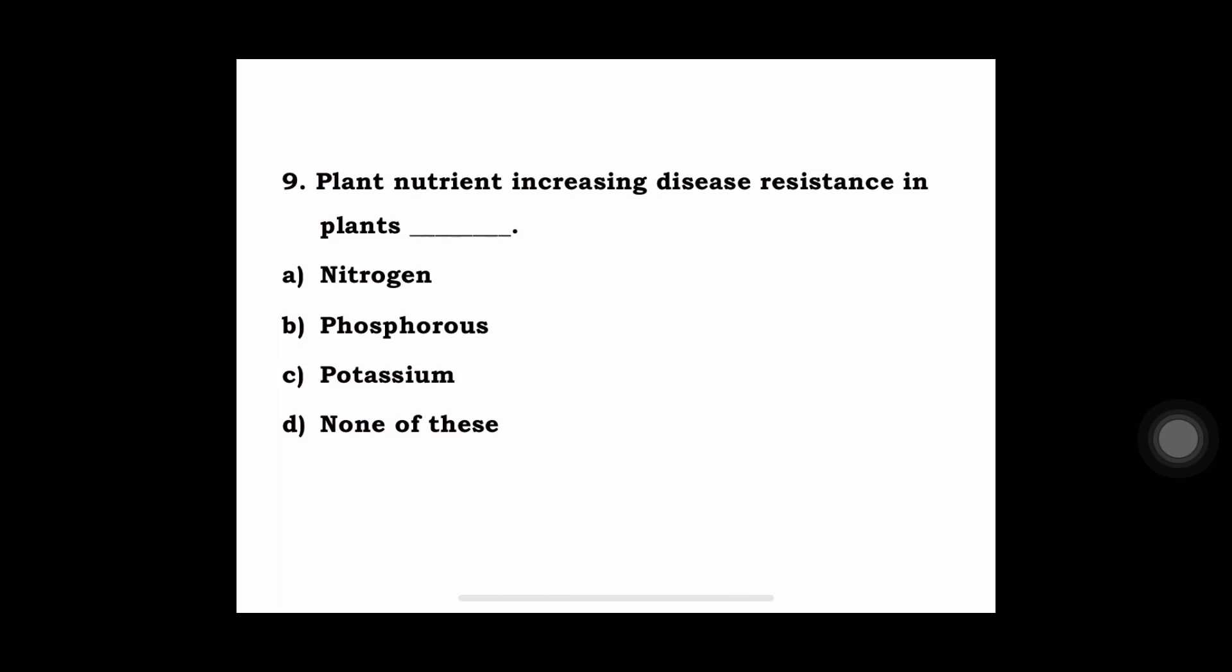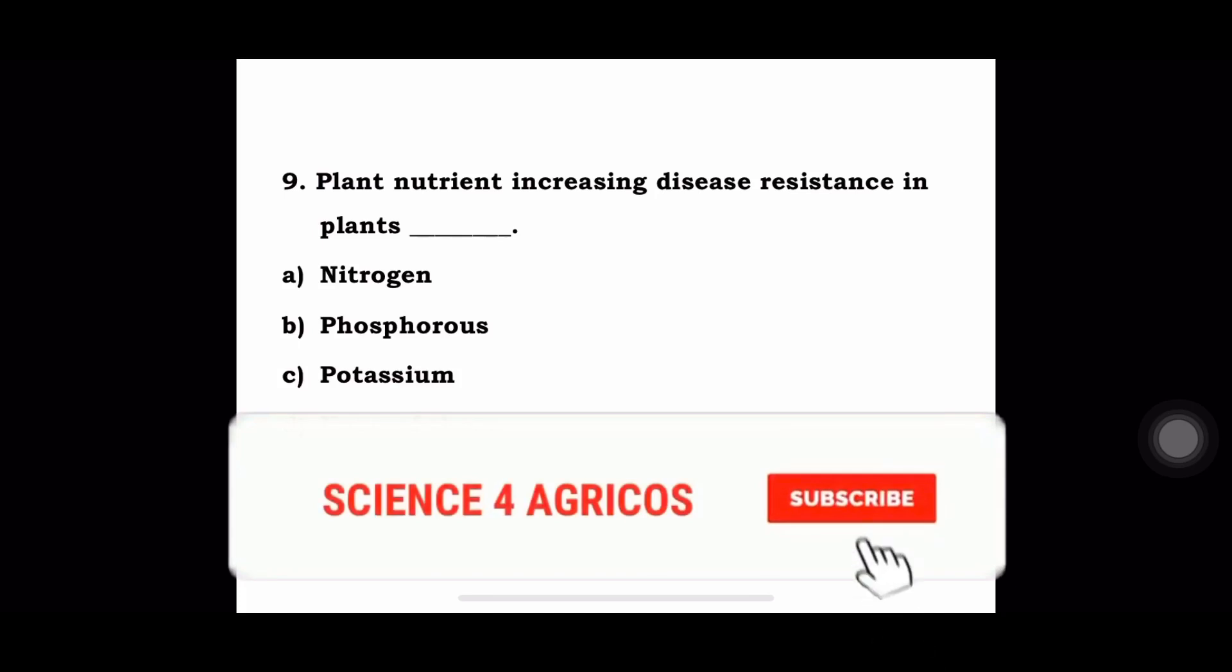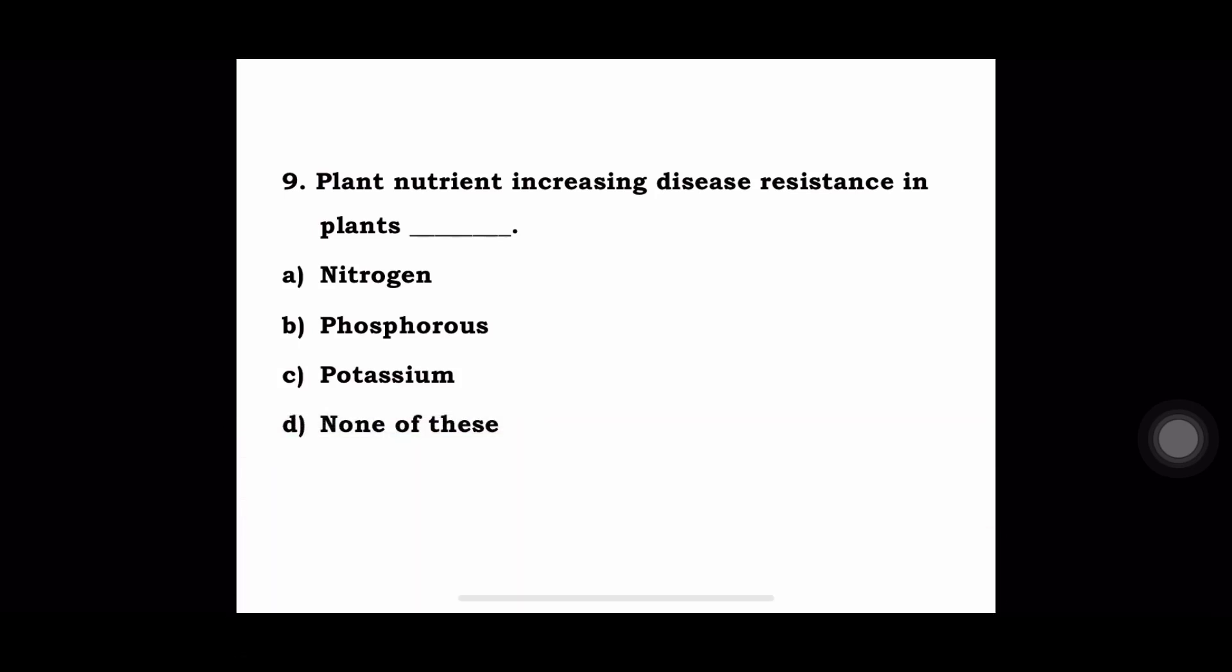Ninth question: plant nutrient increasing disease resistance in plants? a) Nitrogen, b) Phosphorus, c) Potassium, d) None of these. The answer is potassium increases disease resistance in plants.